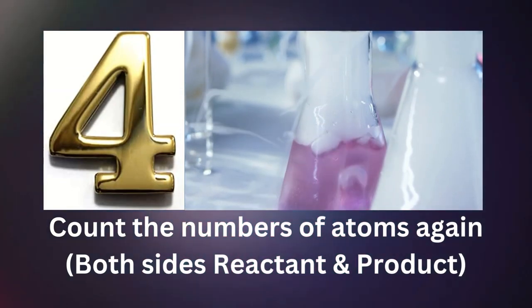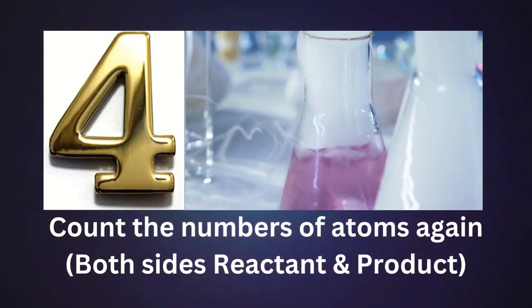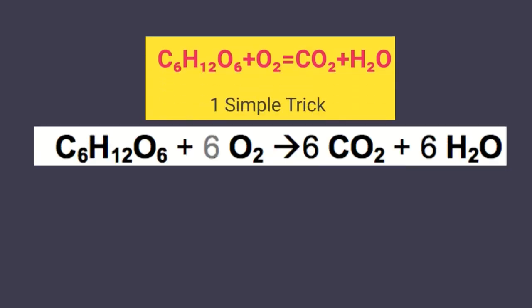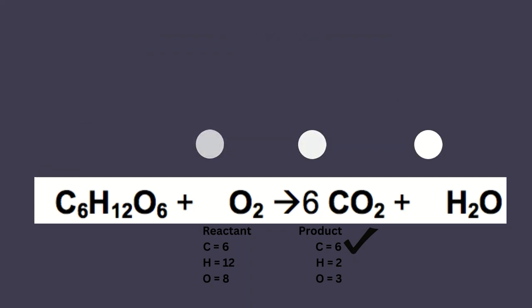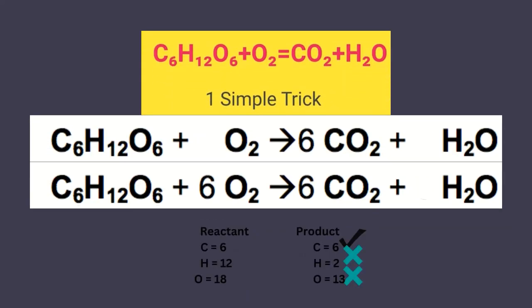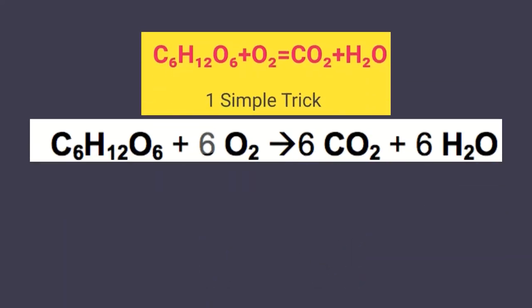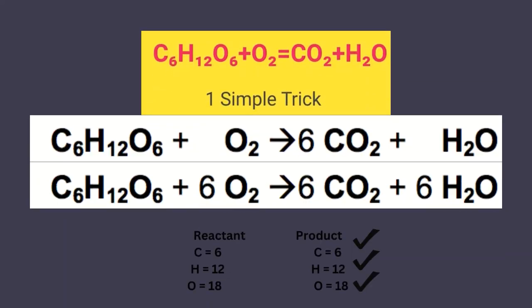Step number four. Count the numbers of atoms again, both sides reactant and product. Simple trick. Again, change the coefficient of any other of the substances, reactant and product, if required. And recheck number of elements from both reactant and product sides.